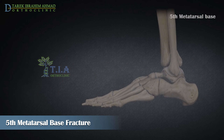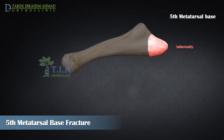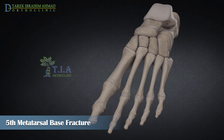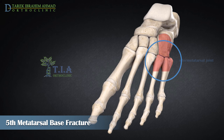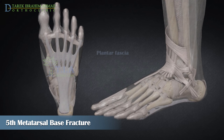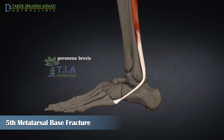The fifth metatarsal is located on the lateral side of the foot. Its proximal portion is divided into three parts: the tuberosity, metaphysis, and proximal diaphysis. The base or proximal portion of the fifth metatarsal articulates medially with the fourth metatarsal, while the tuberosity articulates proximally with the cuboid.